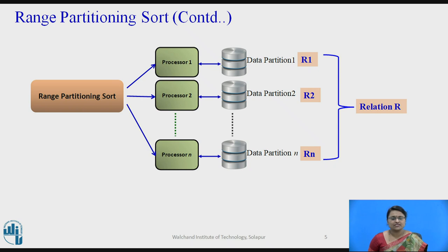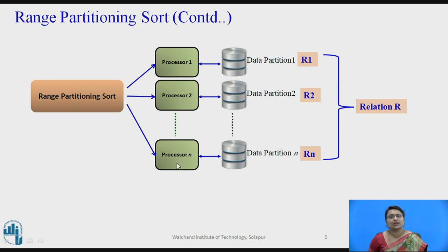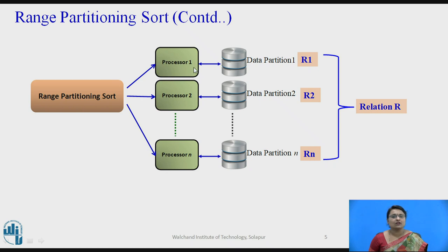The hardware scenario is that the operation we want to parallelize is sorting, and we are using range partitioning technique. There are processor 0, processor 1 till processor n minus 1, and correspondingly disk 1, disk 2, disk 3. The relation R is partitioned as R1, R2, Rn. Partition R1 is stored in disk D1, which is associated with processor 1, so all operations on that data are handled by processor 1.